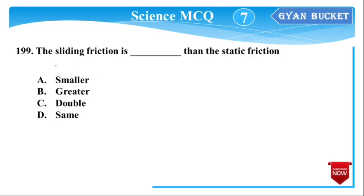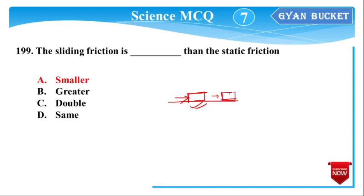Next question: Sliding friction is less than static friction. For example, if a box is on a table and you want to move it from rest, you overcome static friction. Once it is sliding, the friction acting is sliding friction, which is smaller. The answer is option number A.